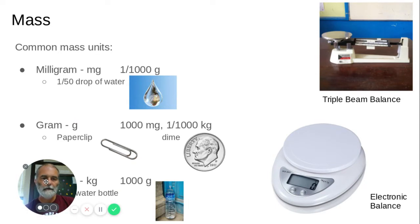A few of the common measurements for mass would be milligrams. And if you think of it, it's 1/50th of a drop of water. So you'd have to break a drop of water into 50 drops to make one milligram. One gram is like a paper clip. And a water bottle, most of the water bottles that you would drink that would be approximately one liter would be 1,000 grams.